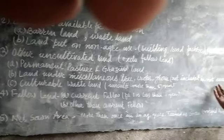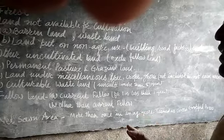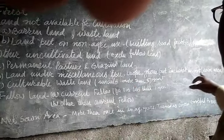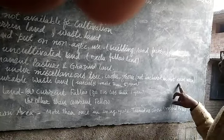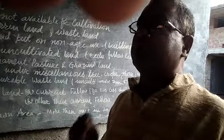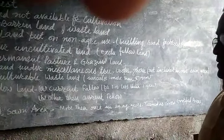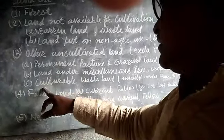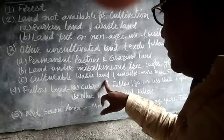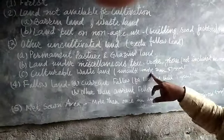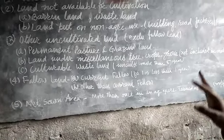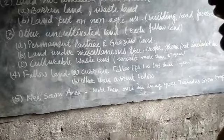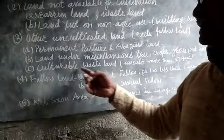Second under uncultivated land is land under miscellaneous trees, where trees and crops grow and are put to miscellaneous purposes. This does not include net sown area, meaning areas where people raise crops. Third is cultural wasteland, meaning areas where no agricultural crops have been grown for more than five years — these are considered cultural wasteland.